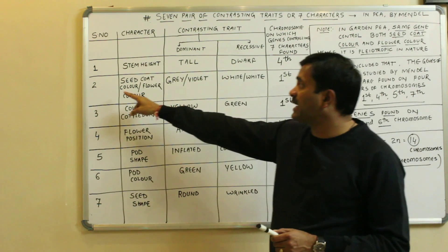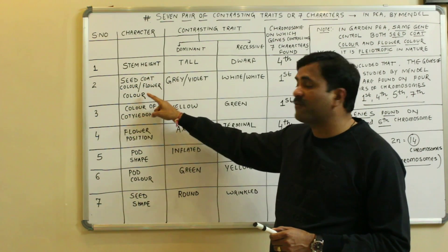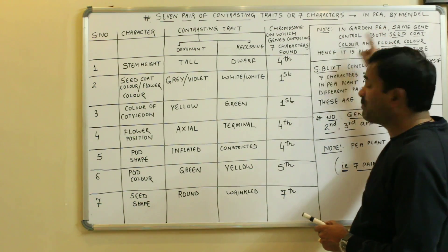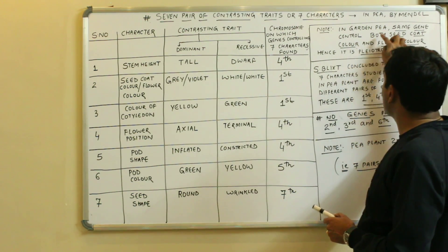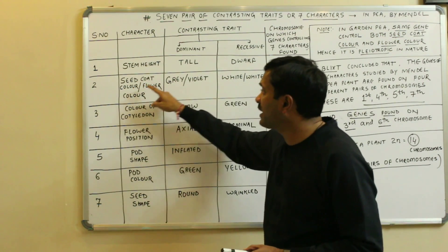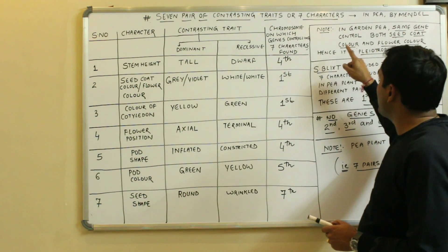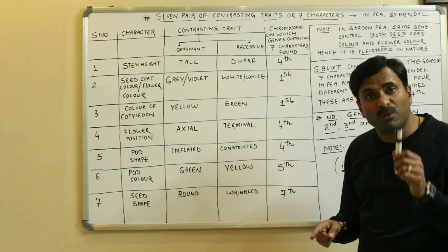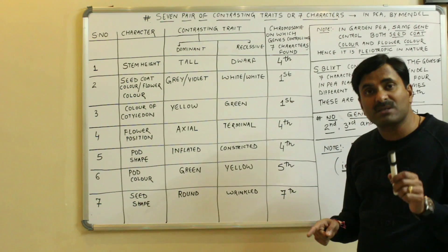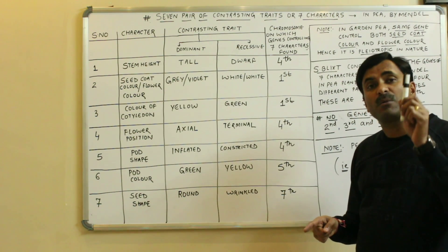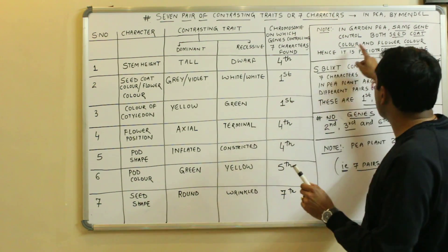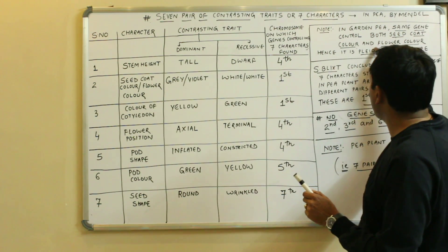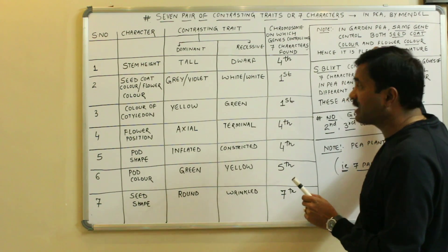Now coming to the second character: seed coat color and flower color. Before discussing this, you must know that in the garden pea the same gene controls both seed coat color and flower color, and hence it is called a pleiotropic gene. A pleiotropic gene means a single gene controls more than one character. Here, the single gene controls two characters: seed coat color and flower color.